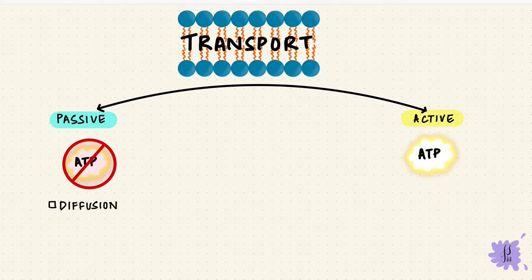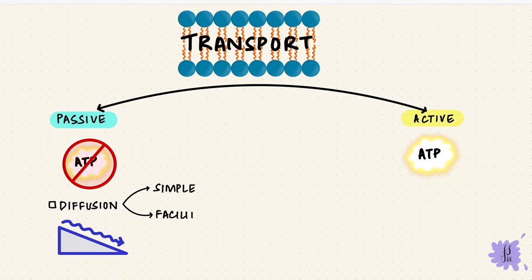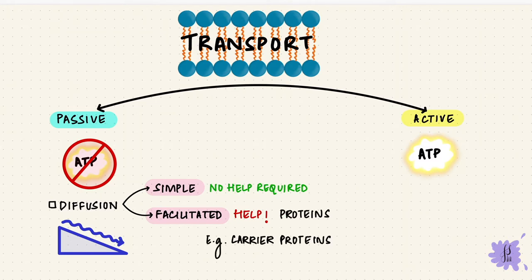Diffusion is a form of passive transport, and why it's passive is because the movement is along a concentration gradient. Across the cell membrane, diffusion can happen in two ways: simple and facilitated diffusion. In simple diffusion, the substance doesn't need help getting across the membrane, while in facilitated diffusion it needs help, like from proteins. An example of this would be the carrier proteins. We'll get to the different ways in a bit, but first let's see what diffusion is.